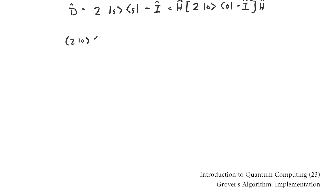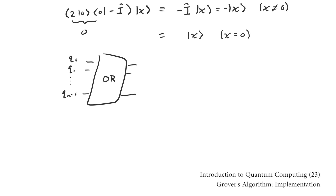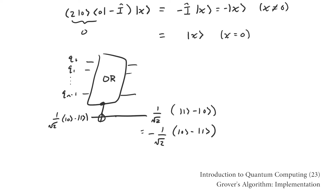This is a useful reinterpretation of D because we know how to implement H, and implementing the reflection about |0⟩ is simple as well. When acting on basis states, the reflection about |0⟩ negates the coefficient in front of all basis states other than |0⟩ and leaves |0⟩ unchanged. So to implement the reflection about |0⟩, we OR together all n qubits — which produces a one if any of them are in state one, and zero otherwise (i.e., if all n qubits were in state |0⟩). We then use the result as the control bit on a controlled-NOT acting on the state (1/√2)(|0⟩ − |1⟩). Implementing the n-bit OR gate from more fundamental quantum gates can be done efficiently, but the general implementation is beyond the scope of this video.